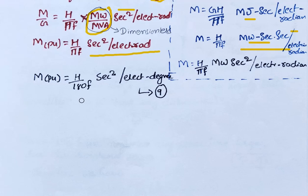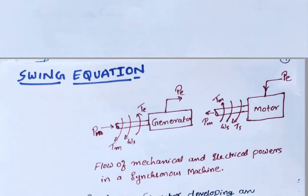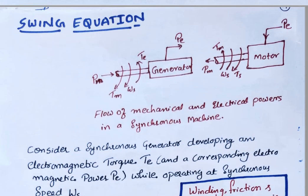M per unit also equals H divided by 180F in second squared per electrical degree. That is equation number 9. Now, coming to the Swing Equation — the swing equation describes the dynamics of a synchronous machine.